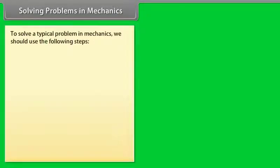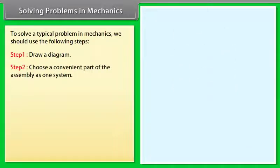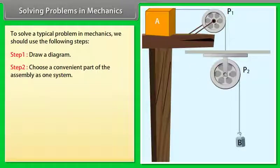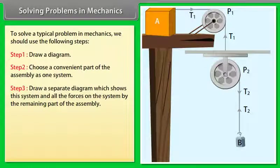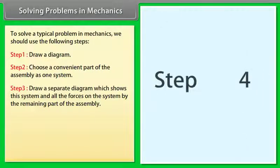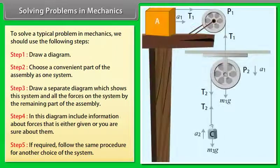To solve a typical problem in mechanics, use the following steps. Step 1: draw a diagram. Step 2: choose a convenient part of the assembly as one system. Step 3: draw a separate diagram showing this system and all the forces on it by the remaining part of the assembly. Step 4: include information about forces that is either given or you are sure about. Step 5: if required, follow the same procedure for another choice of the system.